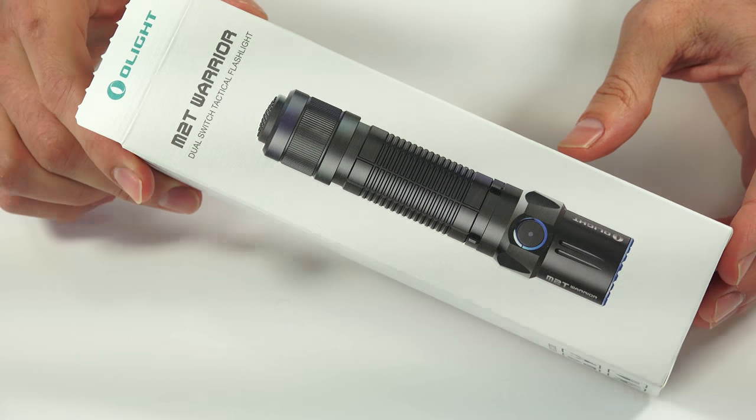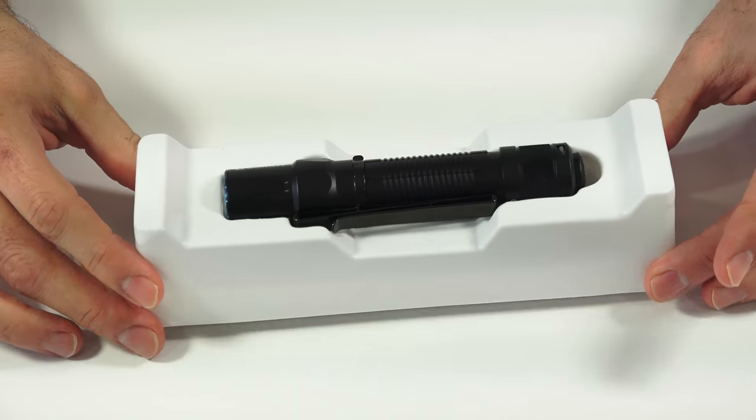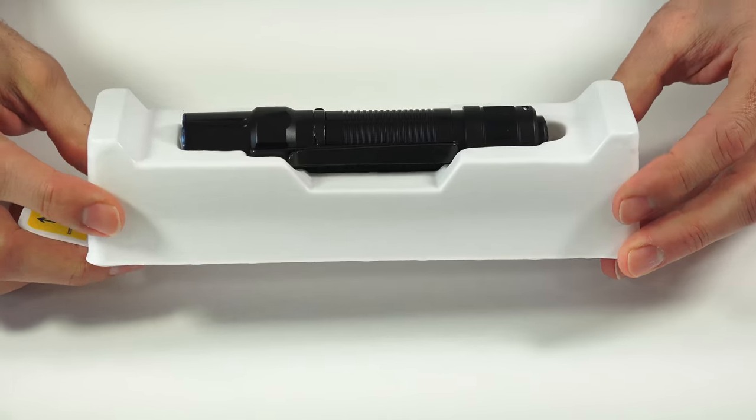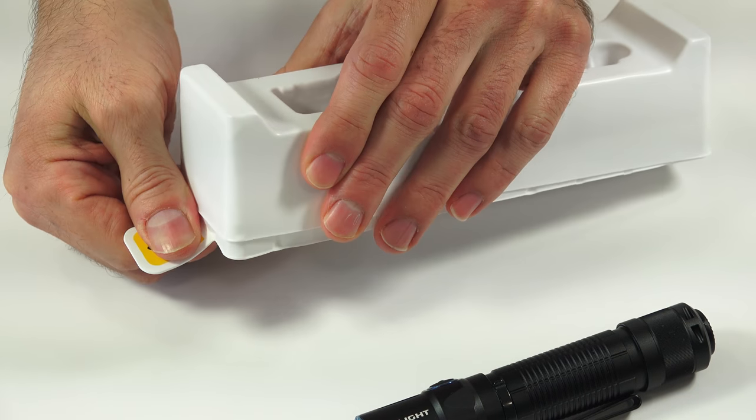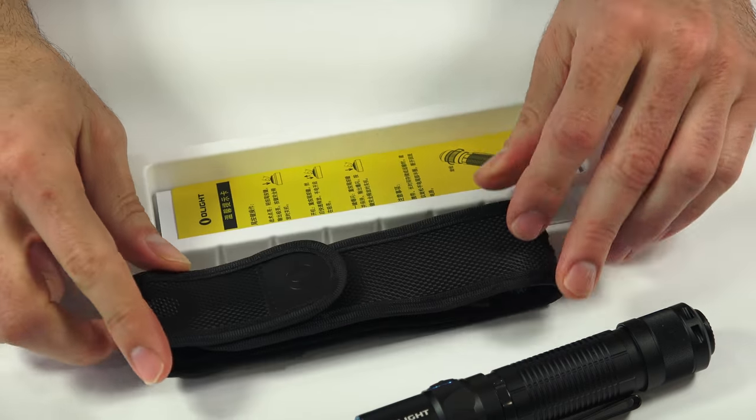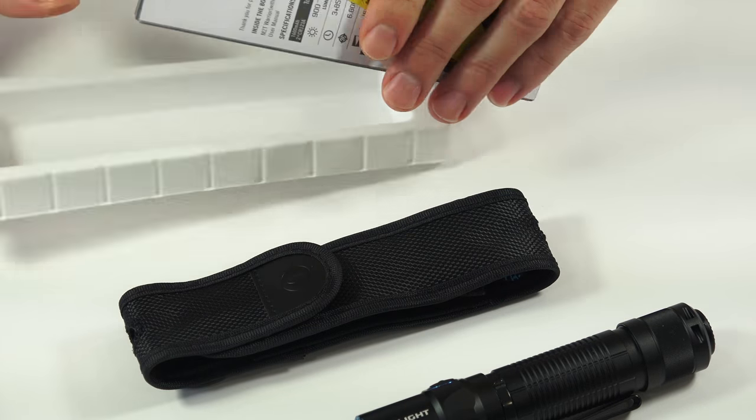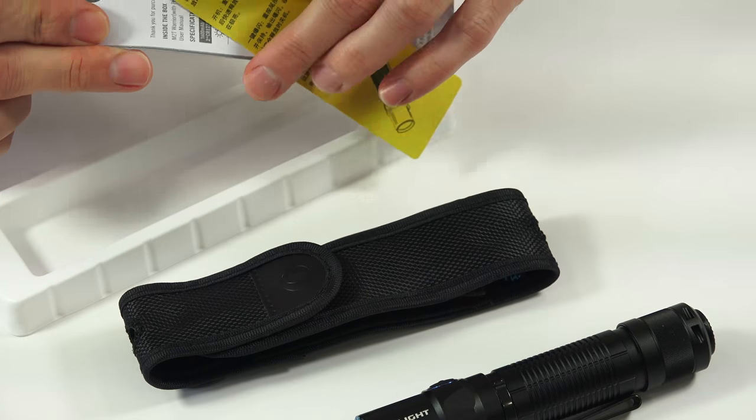So you open this up and you pull out this piece here. The light comes in there, and then there's a little tab on the side here. You lift that up and underneath here in a little tray is the belt clip case and then some instructions on how to use the tail cap and the instruction manual in a bunch of languages.